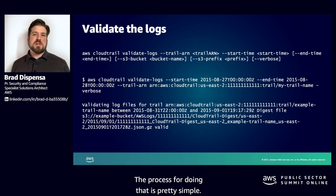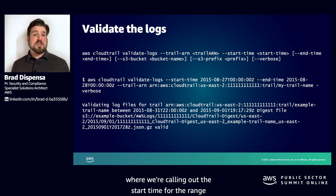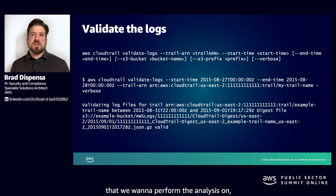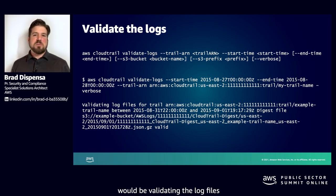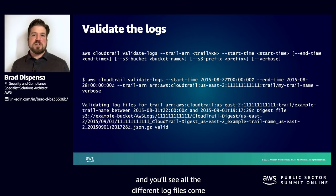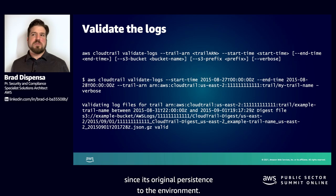The process is pretty simple. Here you can see a snippet using the CloudTrail validate logs file function. A more complete example calls out the start time for the range you want to analyze, the end time to set the threshold, and the specific trail ARN you want to target. The output will show all the log files coming through in that validation step, helping you identify any log file that may have been tampered, altered, or modified since its original persistence to the environment.